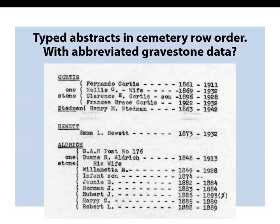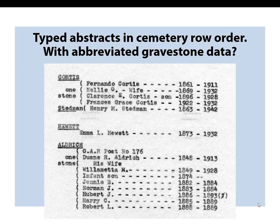There are also typed abstracts with abbreviated gravestone data, and the question is whether somebody actually abstracted the information. For instance, Fernando Cortes died in 1911, born in 1861 — does his gravestone have his full date of birth, or maybe just a calculated year? Or perhaps it's a 20th century stone where the large family monument just gives the year of birth and year of death. You decide, but don't rely just on transcriptions. Go out to the cemeteries, search Find a Grave and Billion Graves, or make a request for a photograph to be taken. Maybe someone else can settle that question ahead of time before you visit.